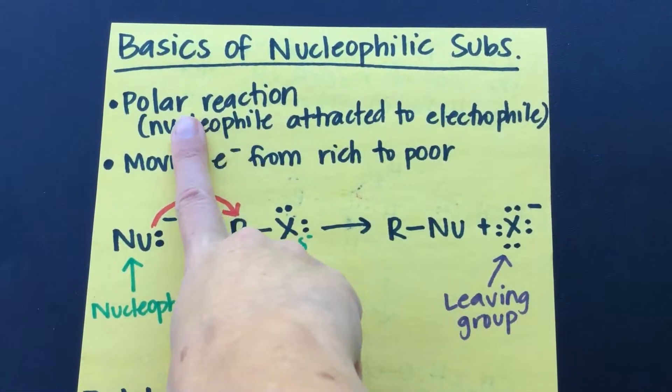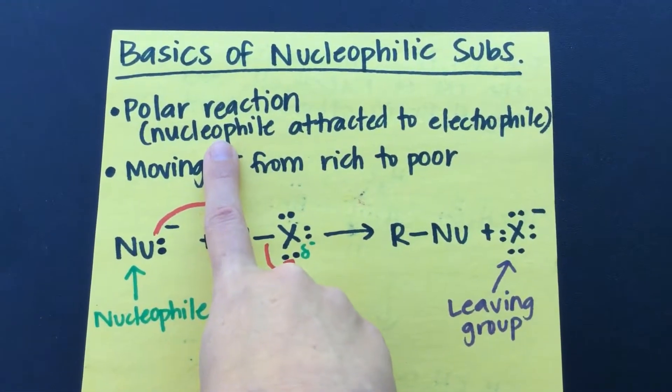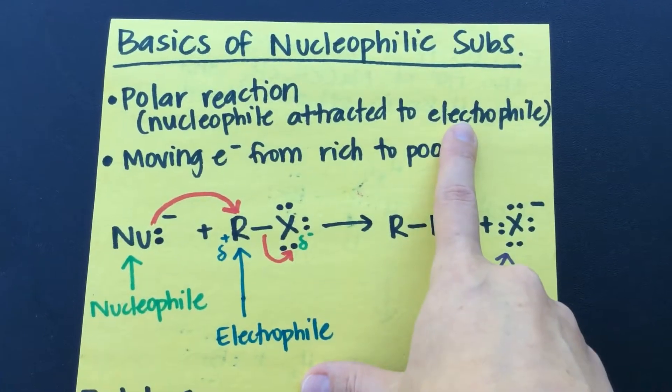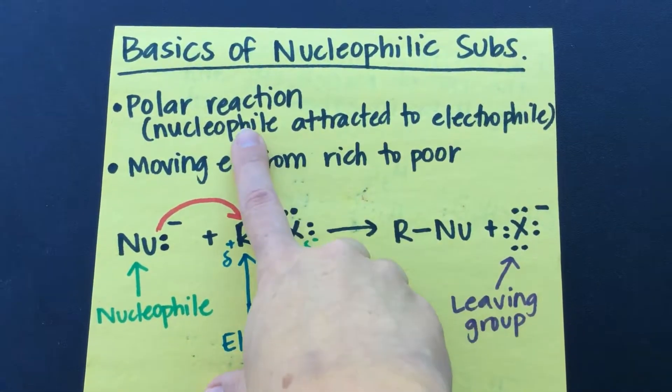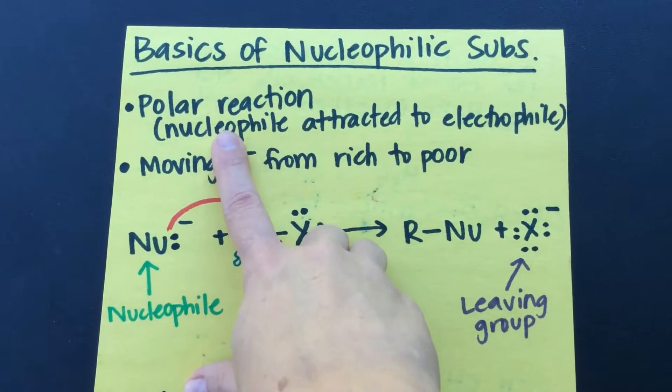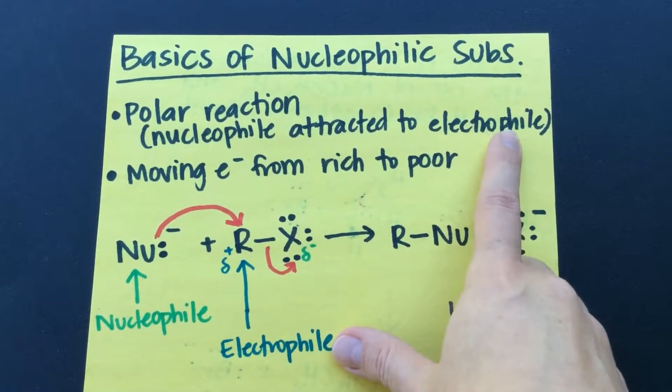So what's some general information that we need to know about this? Well, first of all, we need to know that it's a polar reaction. It involves a nucleophile being attracted to an electrophile. Remember, phile means loving. So, nucleophile and electrophile.